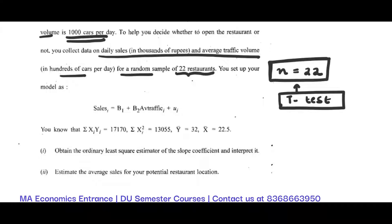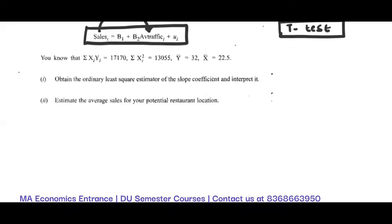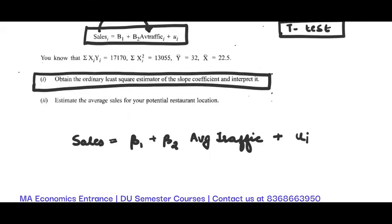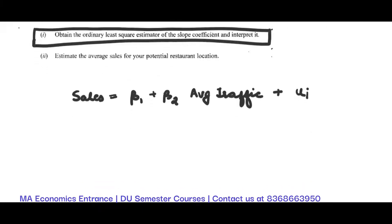You can set up your model like this: sales is a function of average traffic, so sales = β₁ + β₂(average traffic) + error. The question asks us to obtain the ordinary least squares estimator of the slope coefficient and interpret it.